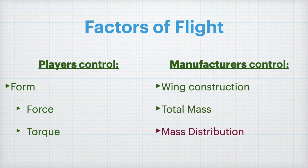The second category are what manufacturers can control. Manufacturers can control things like the wing construction or the rim shape, the total mass, and then the mass distribution.